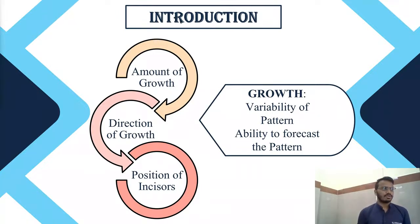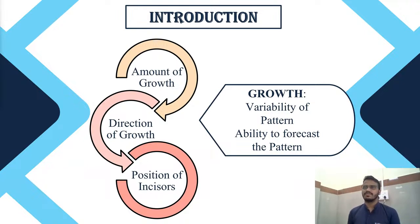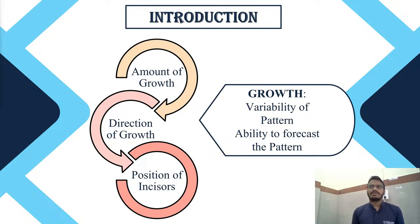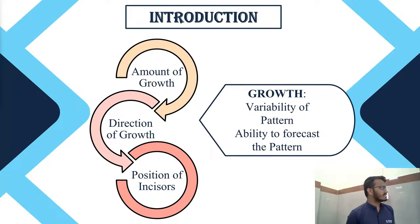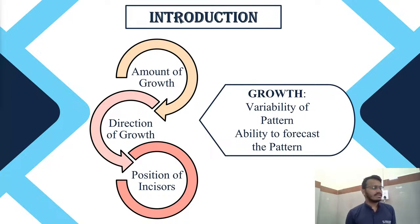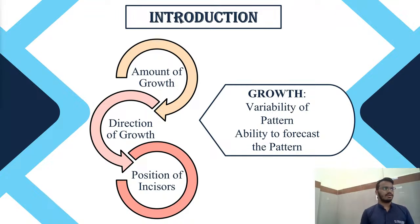The second factor is the direction of growth — whether horizontal or vertical — and accordingly what are the favorable chances for functional appliance therapy. The third factor is the position of incisors. Since maxillary incisors are almost stable in relationship to the palatal plane, but due to basal growth in the mandible, the axial relationship between maxillary and mandibular incisors can change. This variability of the growth pattern, and the ability to predict how growth will progress in the individual, are key considerations.